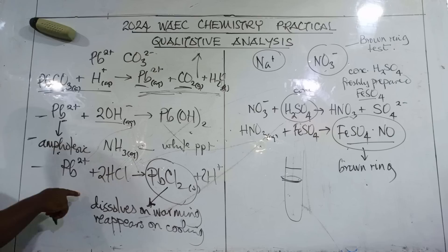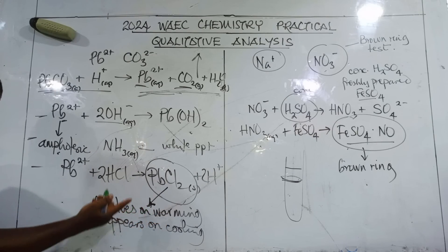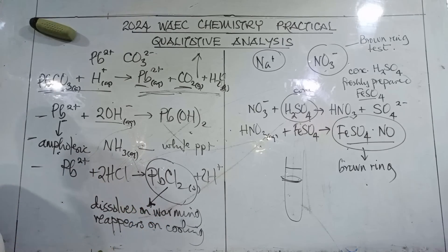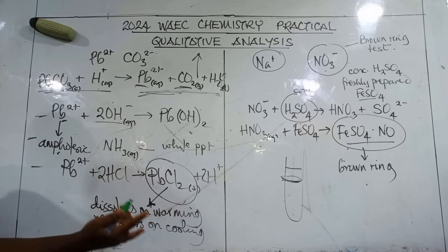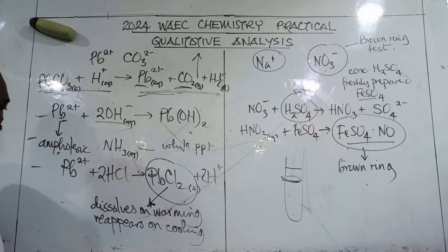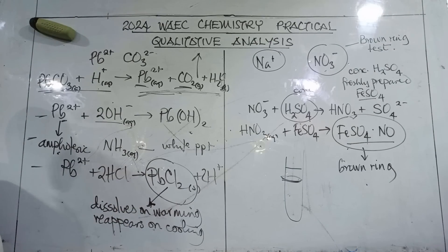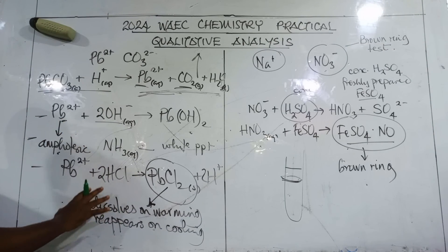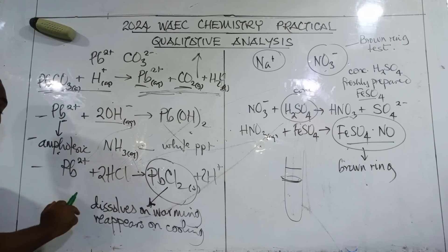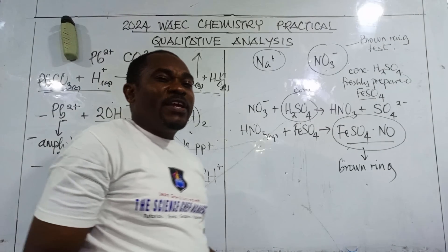When you allow it to cool, the white precipitate reappears. Once that happens, it confirms that the precipitate is lead(II) chloride and the cation present is the lead(II) ion.